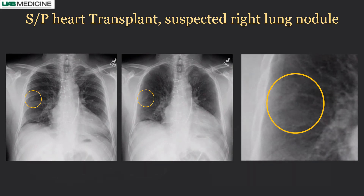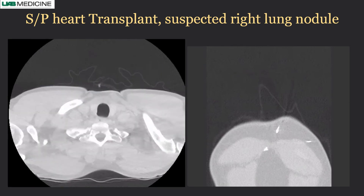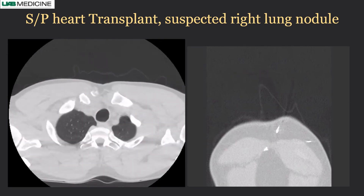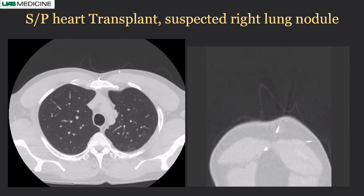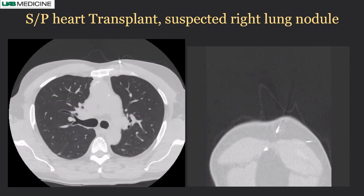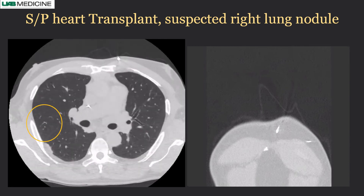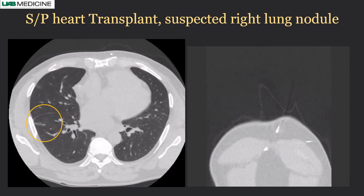This patient ended up having a non-contrast CT of the chest, which showed that the abnormality was actually along the pleura at the posterior rib.